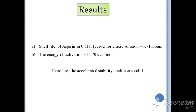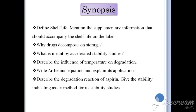Here we conclude the experiment and go through some synopsis questions. Question 1: What is shelf life and what supplementary information should accompany it on the label? Shelf life can be defined as the period from the date of manufacturing that a drug product is expected to retain within its approved specification while stored under defined conditions. It is typically expressed in 24, 36, up to a maximum of 60 months. Along with shelf life, dose, handling instructions, and storage conditions should also be mentioned on the label.